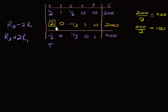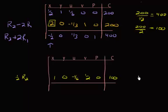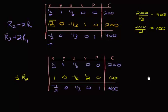Now I need to turn that pivot element into a 1. I'll divide the entire row two by 2. After dividing, we have our updated row. We're not changing the other rows, so those stay as written — giving us our current simplex table.